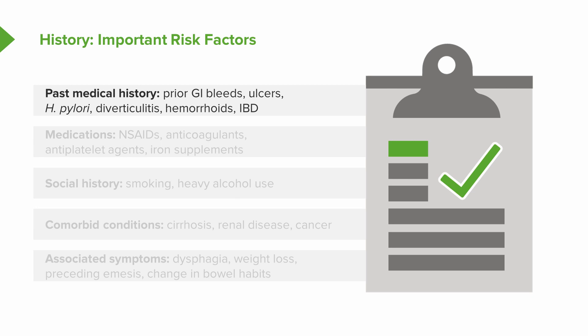Ask about their medications. Do they use NSAIDs frequently? Are they on any anticoagulants or antiplatelet agents like aspirin or clopidogrel? Importantly, do they take iron supplements? Iron pills can actually turn the stool a dark color and may obscure the clinical picture of a GI bleed.